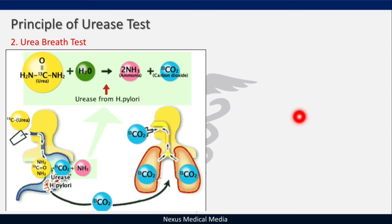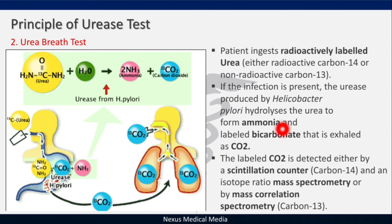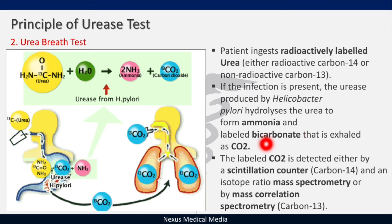The Urea Breath Test is non-invasive. A patient ingests radioactively labeled urea — either radioactive carbon isotope-14 or non-radioactive carbon-13. If infection is present, H. pylori hydrolyze the urea to form ammonia, and the labeled bicarbonate is exhaled as carbon dioxide. This CO₂ is detected using scintillation counting for carbon-14, or isotope ratio mass spectrometry for carbon-13.